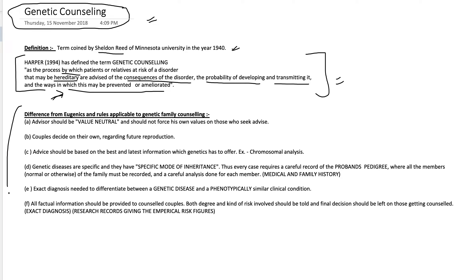There is an important difference between eugenics and genetic counseling. The first rule is that the advisor should be value neutral and should not force their own values on those who seek advice. In eugenics, the process is value-loaded — certain traits are labeled desirable or undesirable and procreation is advised accordingly. In genetic counseling, however, it is always value neutral; you only provide facts and do not impose your values on those seeking advice.